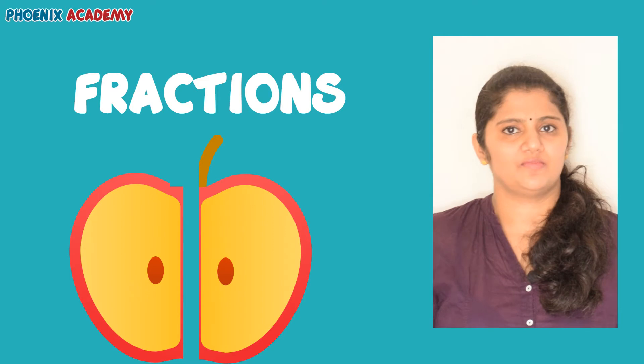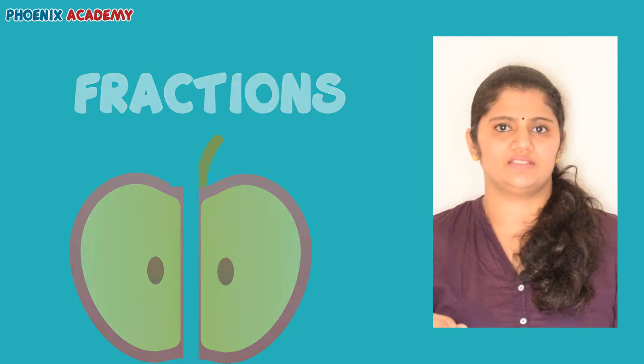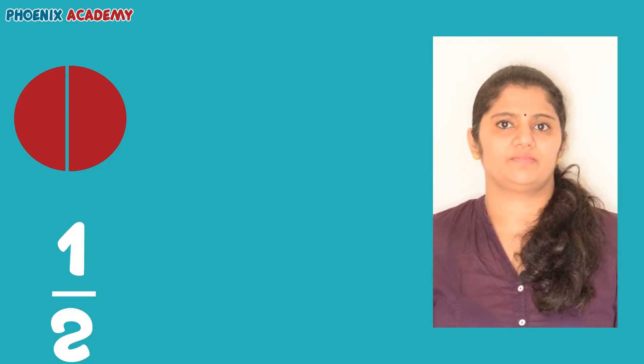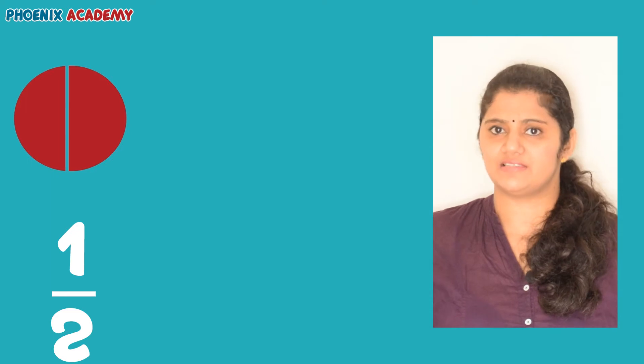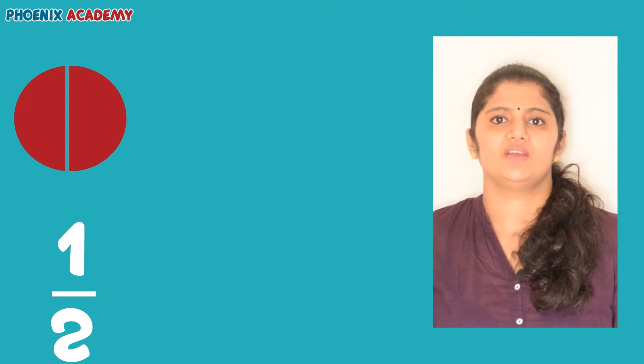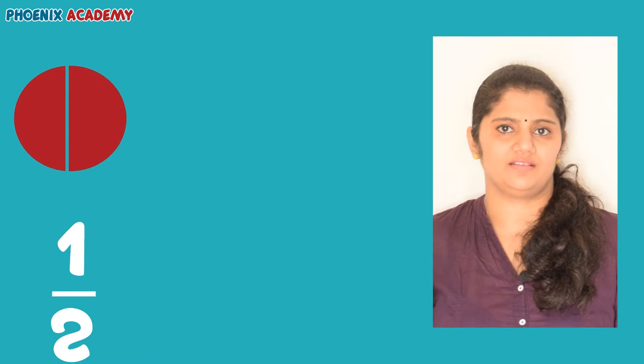Let's see some fractions of a whole object. This is a circle. The circle we have divided into two equal parts. Each part is a half. Half is written like this. Two halves make a whole circle.